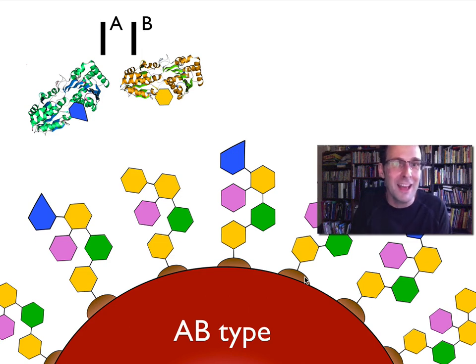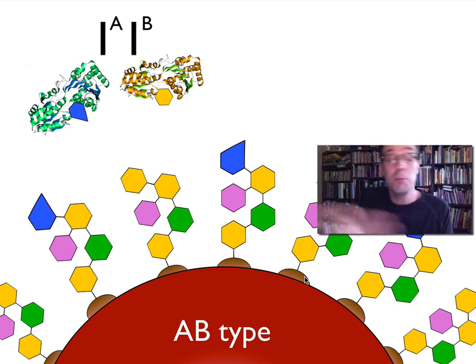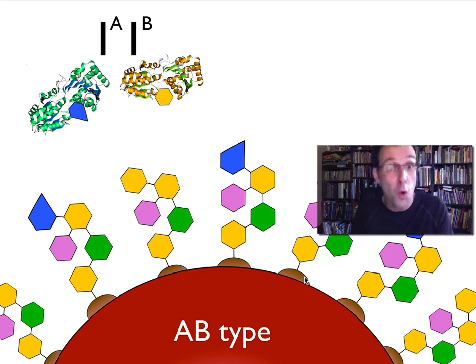So somebody with AB-type blood — that will have happened. Their B-cells will have been trained not to react to those antigens, so they won't produce antibodies against either A or B.